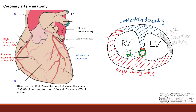So next is coronary artery anatomy. We've talked about the layers of the heart and the structure of the heart. Now we're going to talk about the coronary arteries. There are a couple of key ones to note. We have the left main coronary artery down here.